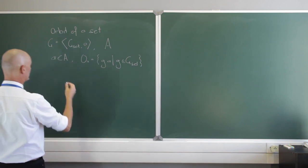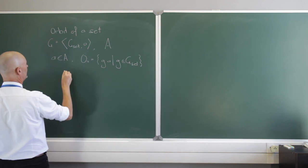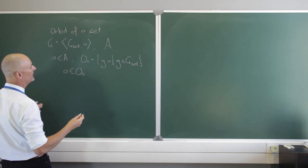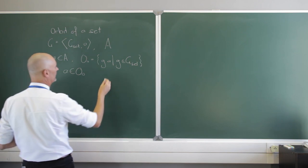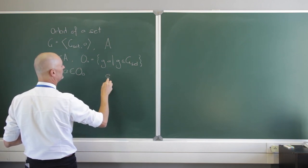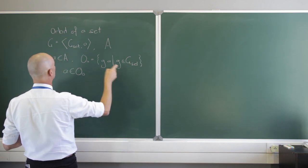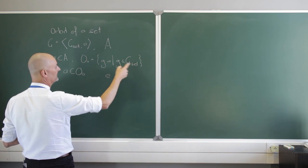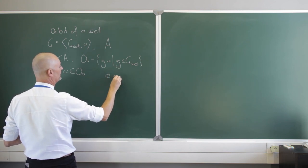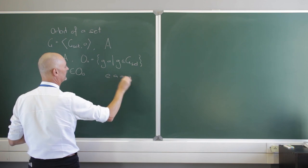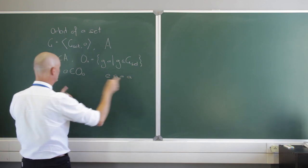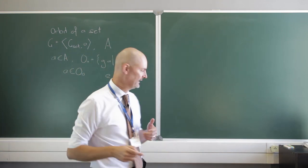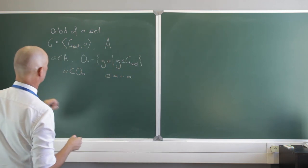The first thing we notice is that a is an element of the orbit of a. Why is that? Well, we know that the identity element is one of the elements in G-set, and if we act it on a we just get a back, so a is indeed an element of its own orbit.